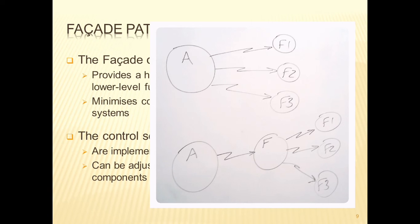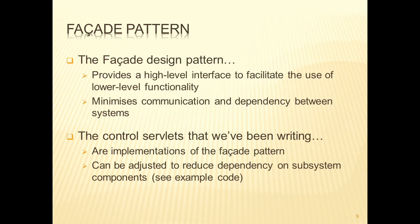The knowledge of the underlying system no longer has to be buried in or implemented in application A. All application A has to do is talk to F, and F has got all that knowledge. So we're separating client from server, and that's a good thing to do. In a sense we could also say that the control servlets we've been writing are also implementations of the facade pattern, because they are the single point of contact for our clients, and then they invoke the necessary components in the underlying system.